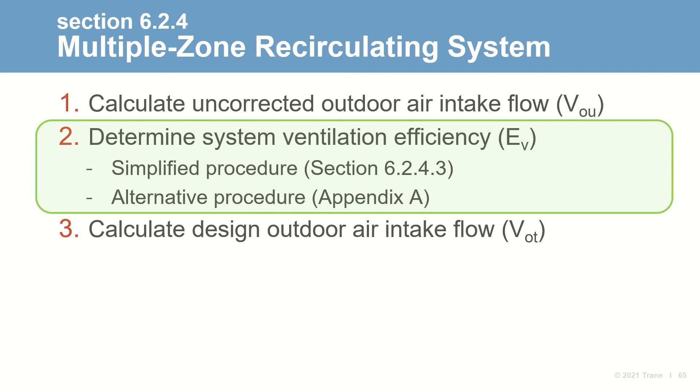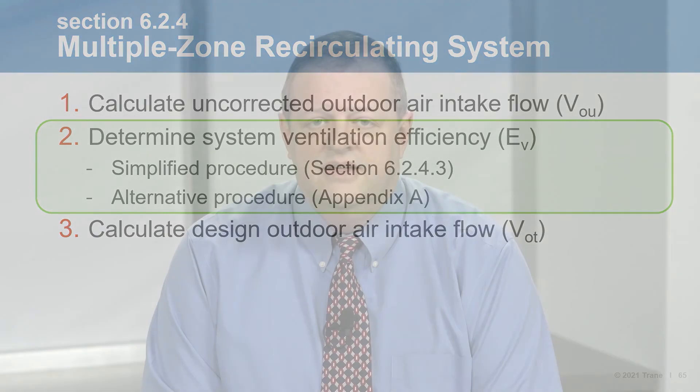This uncorrected intake flow would be required if the system were 100% efficient at delivering outdoor air from the intake to every breathing zone. Since that's not the case, the next step is to determine the system ventilation efficiency. Standard 62 includes two methods: a new simplified procedure, or the alternative procedure in Appendix A. Beginning with the 2019 version, the simplified procedure replaced the previous lookup table. The alternative approach might result in a higher efficiency and lower intake flow in some cases, so it may be worth the effort.